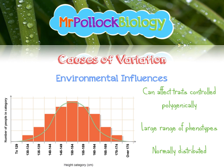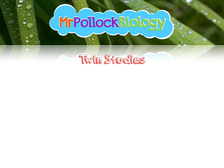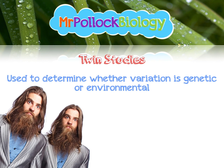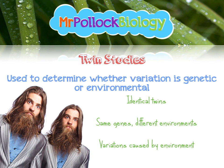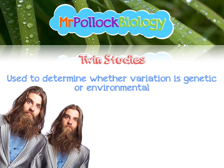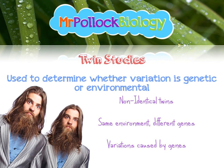But how do we decide whether something is genetically caused or environmentally caused? We could use experimentation — in animals, we use twin studies to determine this. There are two types of twins: identical and non-identical. Identical twins have the same genes, so we can raise them in different environments and look for differences; any variations must be caused by the environment. Conversely, with non-identical twins, which have different genes, we raise them in the same environment and any differences must be caused by genetics.